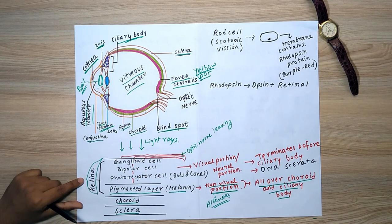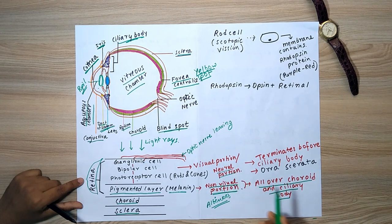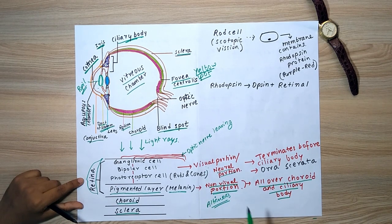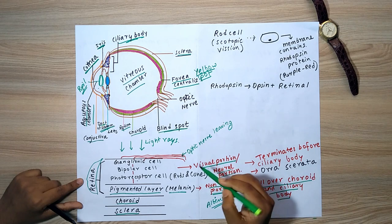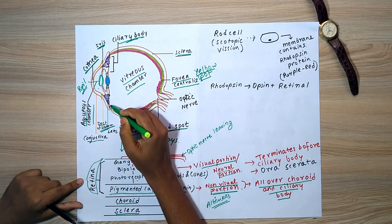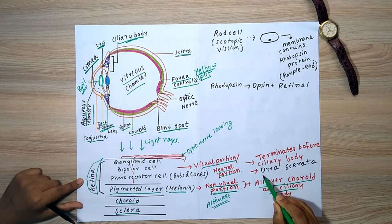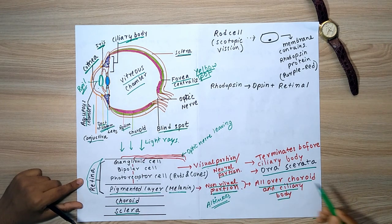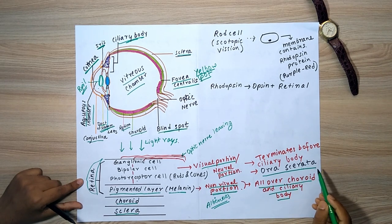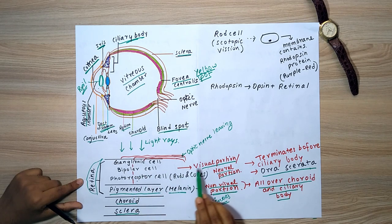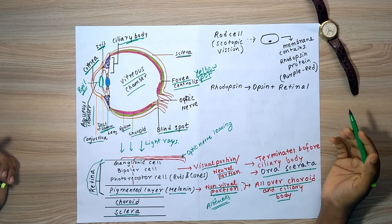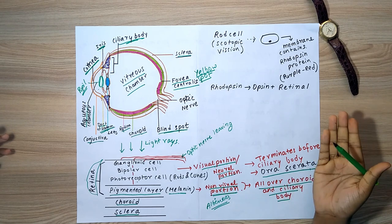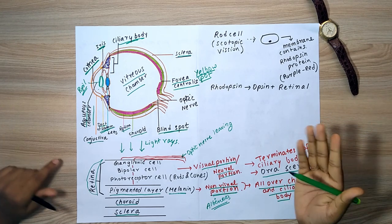The visual portion is also known as the neural portion because it contains all the cells responsible for visual activity. It has a smaller territory compared to the non-visual portion, terminating just before the ciliary body. The point where it ends is known as the ora serrata. Rod cells, which are responsible for vision in low light, are found in this region.